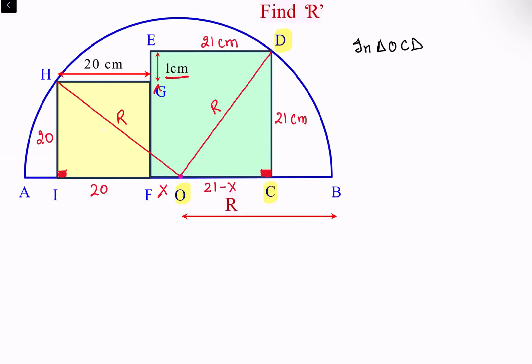So we are getting O D square is O C square plus C D square. Now O D square, this is R square, is 21 minus X square plus C D square is 21 square. Let's call this as observation number one.